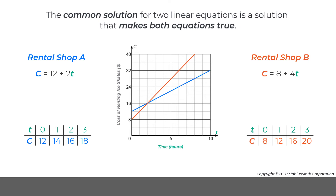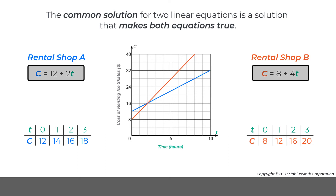The common solution for two linear equations is the solution that makes both equations true. In this example, two linear equations represent the cost of renting ice skates at two different rental shops. A line was graphed for each equation, and the point where the two lines cross, or intersect, represents the rental time of two hours and a cost of $16.